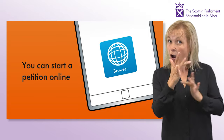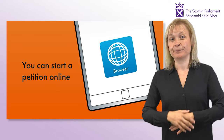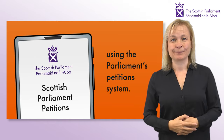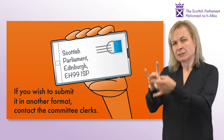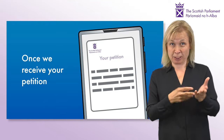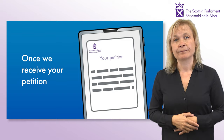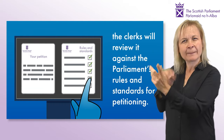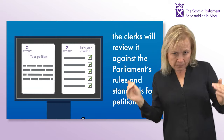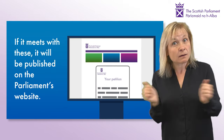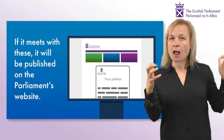You can start a petition online using the Parliament's petition system. If you wish to submit it in another format, contact the committee clerks. Once we receive your petition, the clerks will review it against the Parliament's rules and standards for petitioning. If it meets with these, it will be published on the Parliament's website.